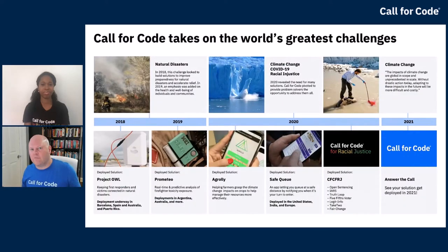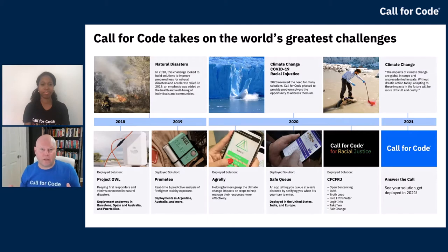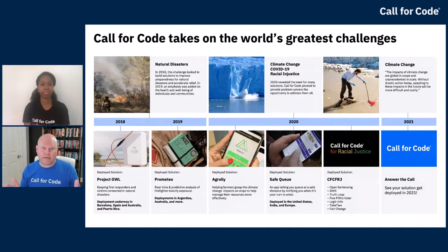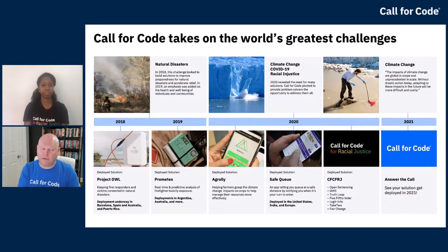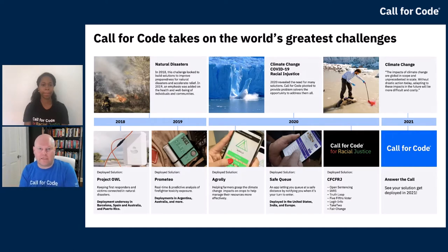If you've heard of Call for Code before, you might know some of our existing programs. When we launched in 2018, we focused on natural disasters — preparing for, responding to, and recovering from them. The very first winner and first project brought into the Linux Foundation was Project OWL, which created an emergency mesh network built on open standards including Arduino, MQTT, and LoRa long-range radio, to restore network access after disasters like Hurricane Maria, where people were disconnected from communications for up to nine months.